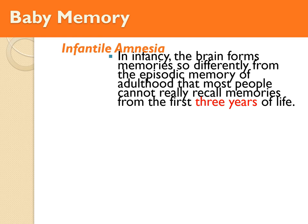Infantile amnesia occurs around age three to four — everything prior to that gets wiped from episodic memory. You don't need to remember how to live in amniotic fluid or how you learned to walk. Procedural memory stays, but episodic memories of life events disappear. Memories you think you have from before age three are likely implanted through photos or others' stories.